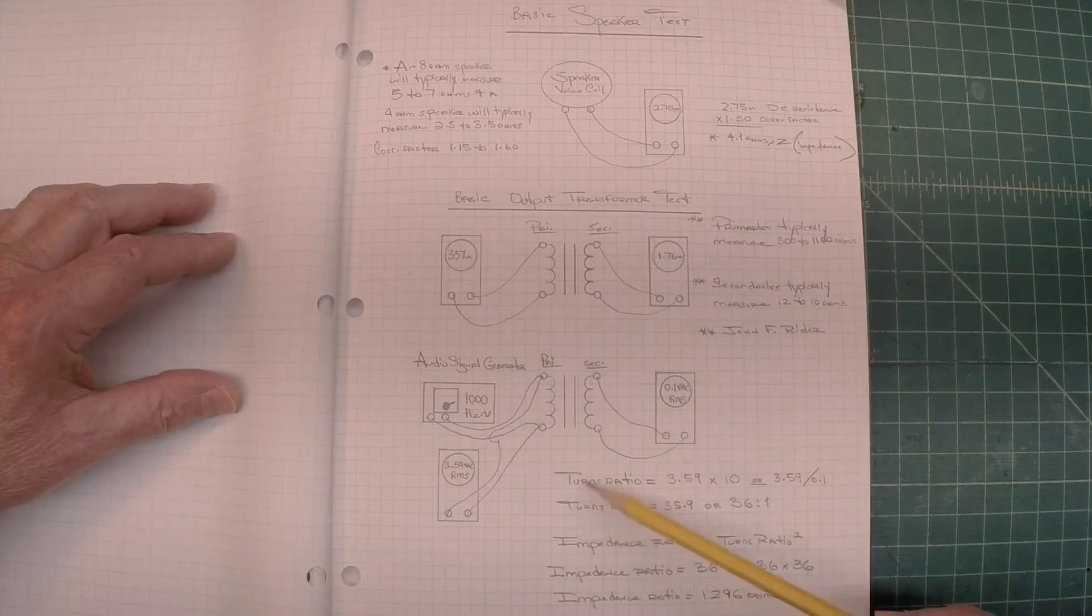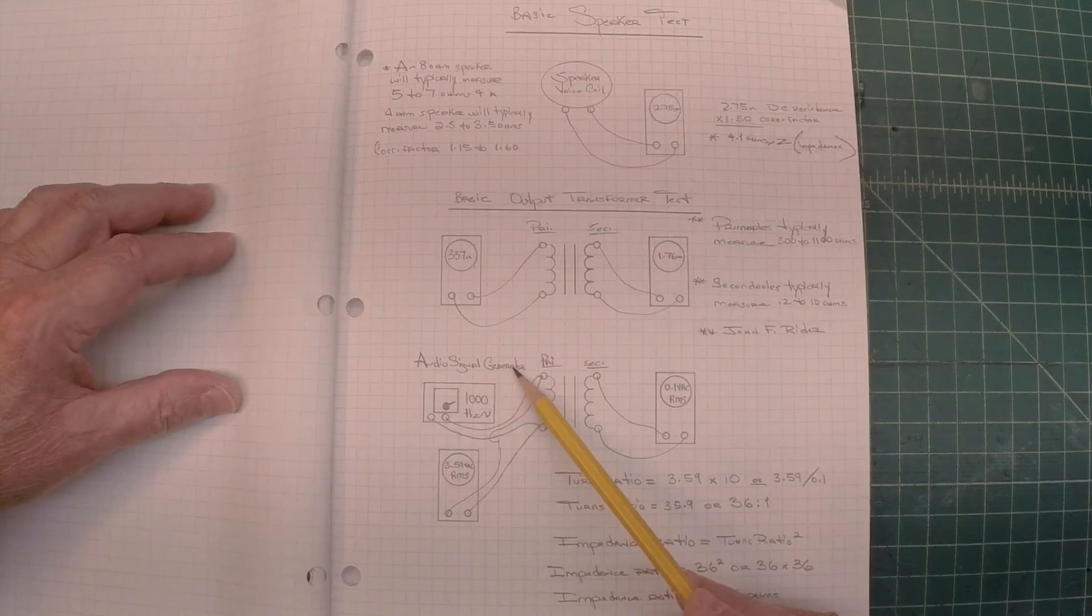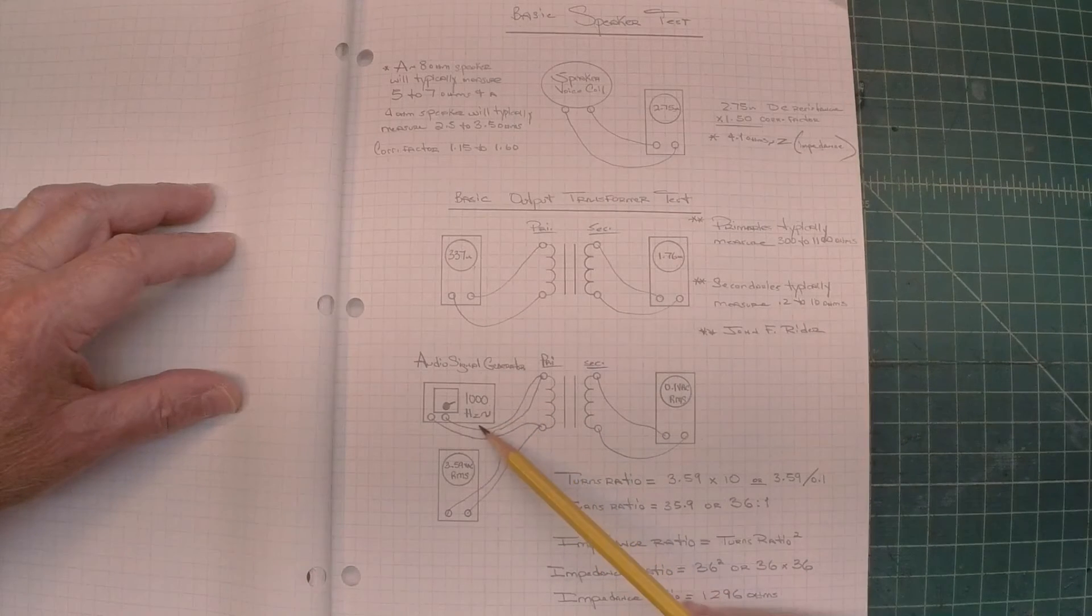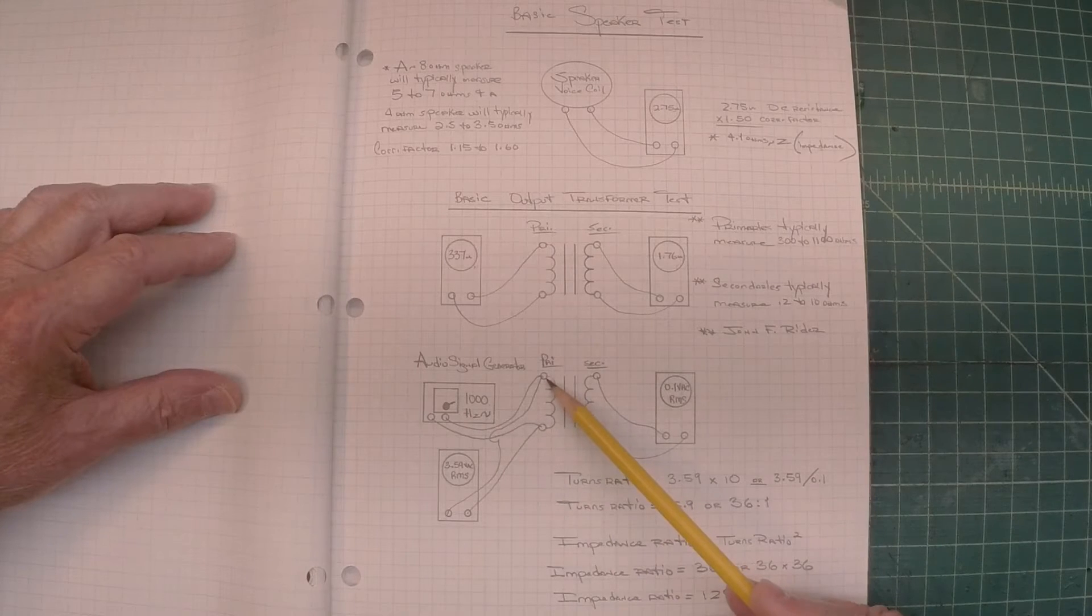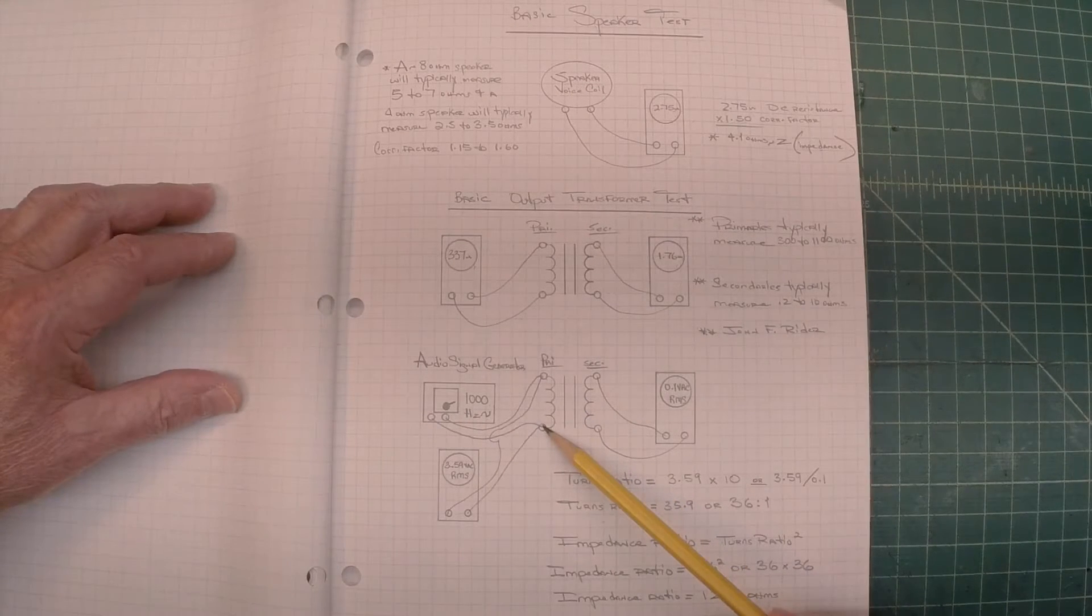You guys have seen this before, but just to simplify it again: I've got my audio signal generator, I'm generating a 1000 hertz sine wave, I've got it hooked up to the primary side of the output transformer.